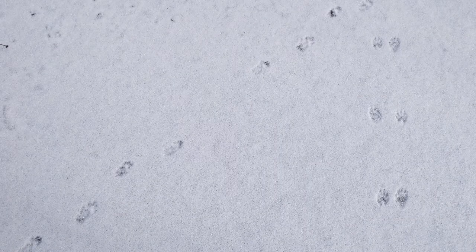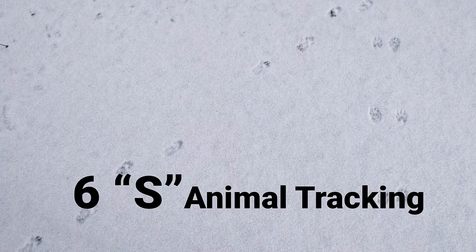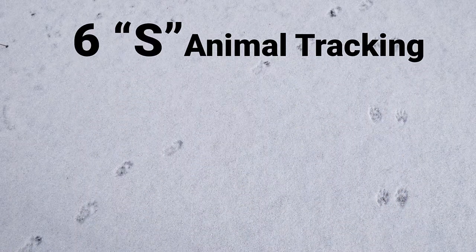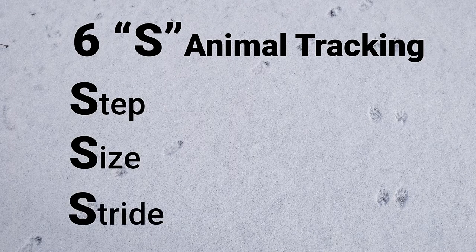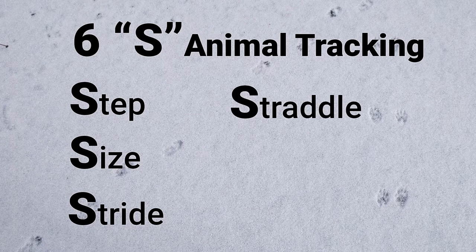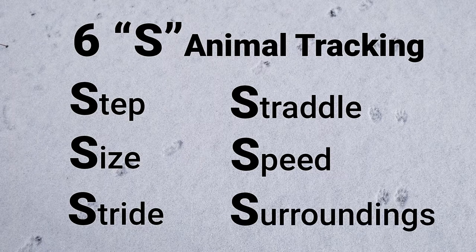To summarize all that we've just learned, the six S's of animal tracking are: step, size, stride, straddle, speed, and surroundings.